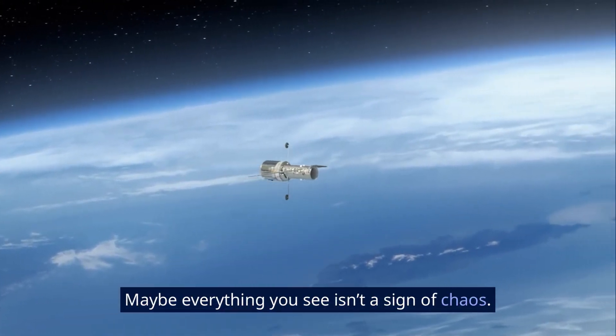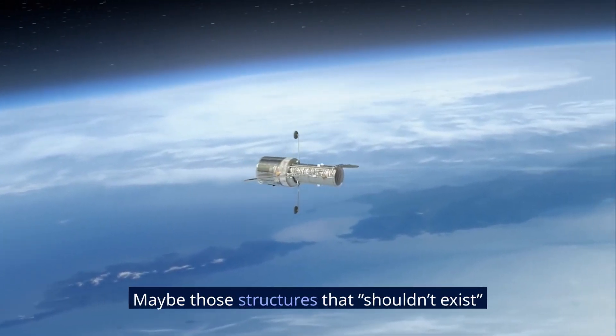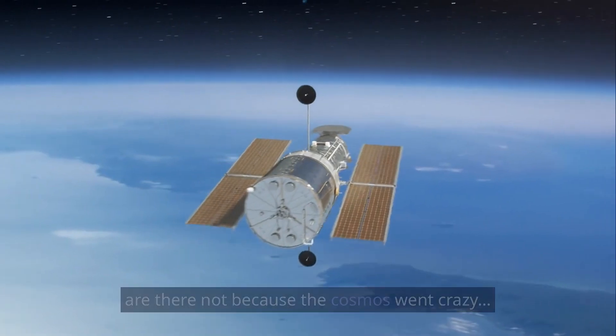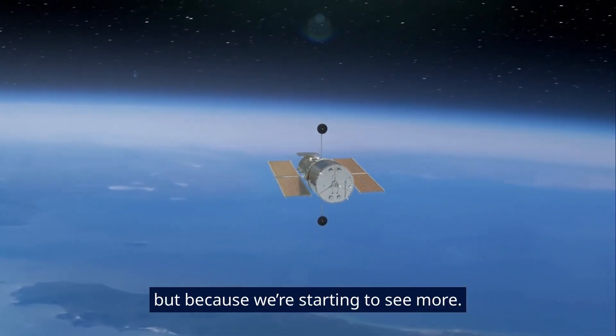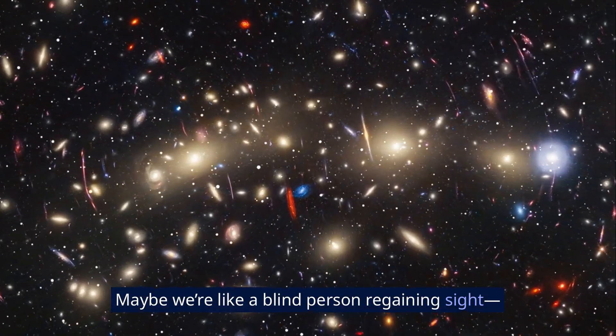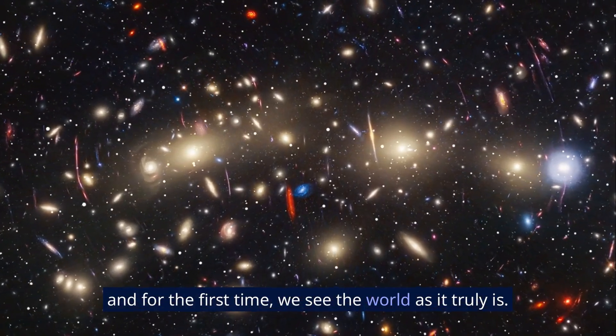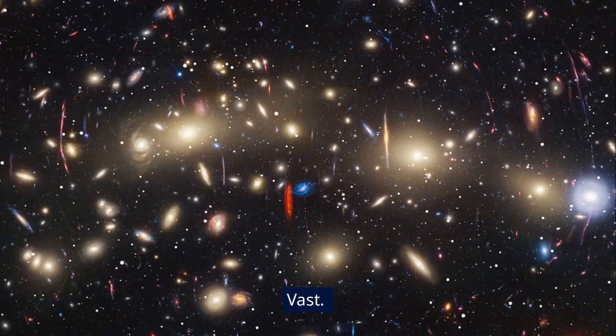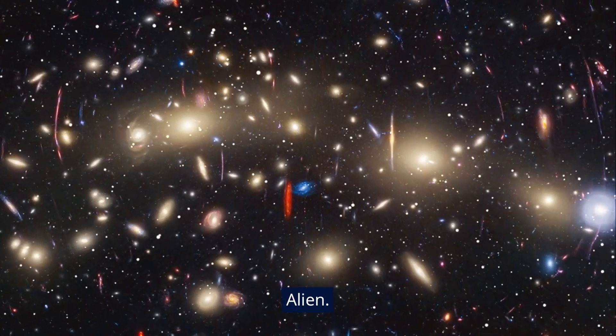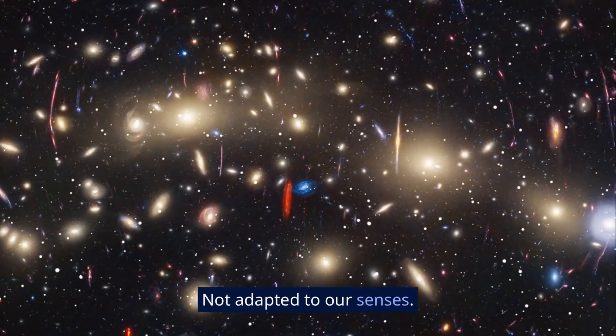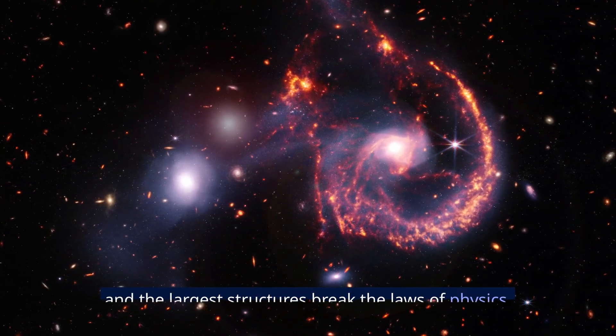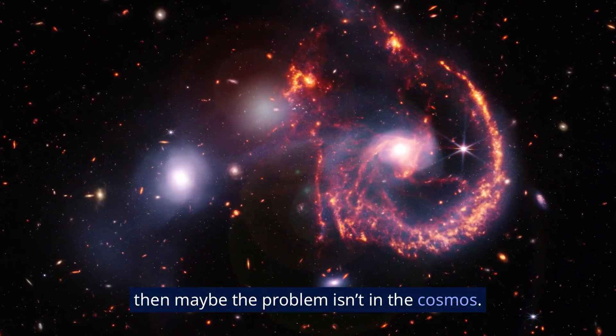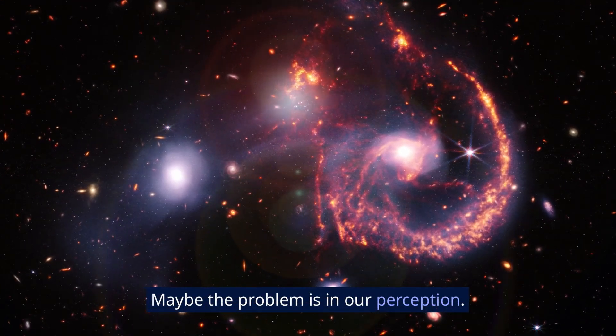Maybe everything you see isn't a sign of chaos. Maybe those structures that shouldn't exist are there not because the cosmos went crazy, but because we're starting to see more. Maybe we're like a blind person regaining sight, and for the first time we see the world as it truly is: vast, strange, alien, not adapted to our senses. Because if 95% of reality is invisible and the largest structures break the laws of physics, then maybe the problem isn't in the cosmos - maybe the problem is in our perception.